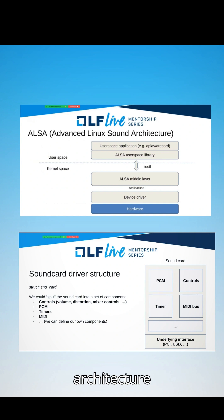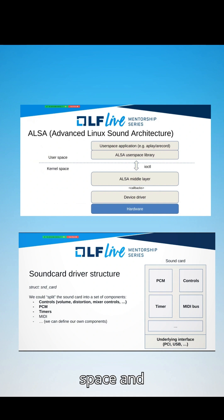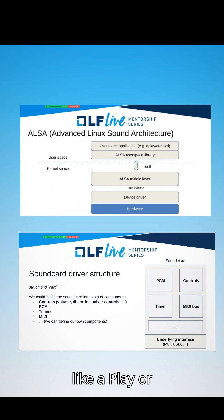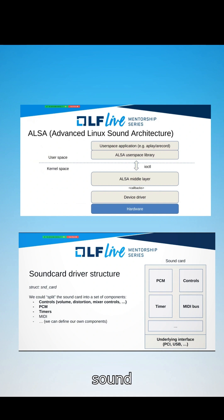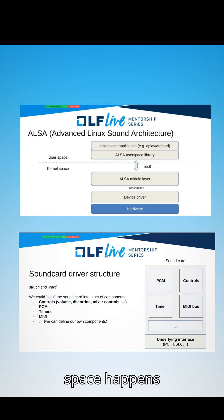Let's look at the ALSA architecture from top to bottom. It's divided into two main parts: user space and kernel space. In the user space, we have your sound applications, like aplay or arecord. These talk to the ALSA user space library, which provides simple functions to interact with sound hardware. Communication between the user space and the kernel space happens through a system call called ioctl.